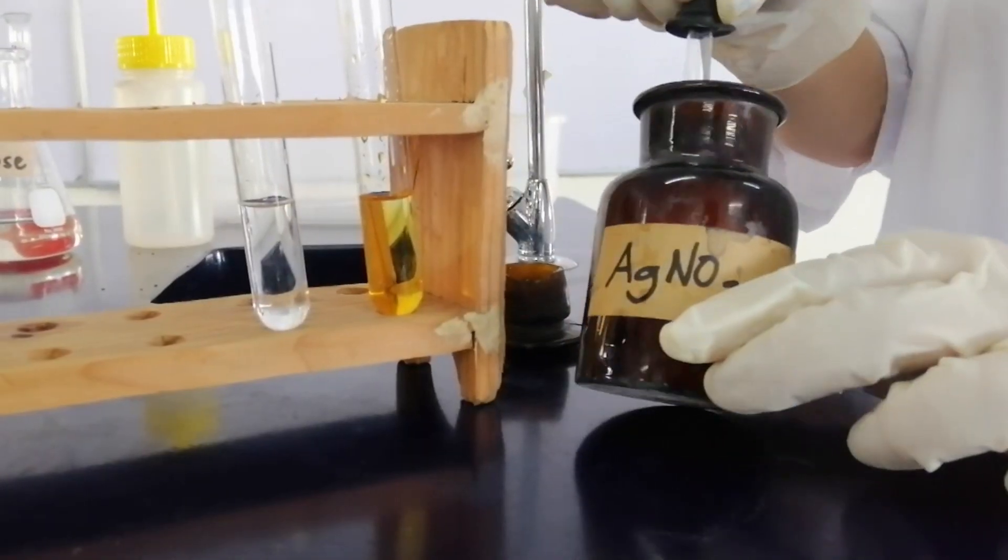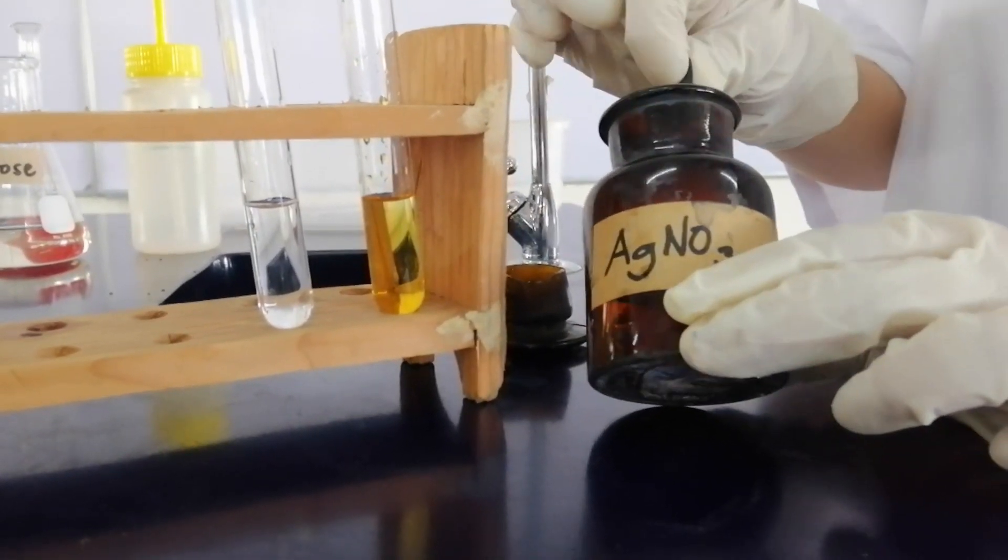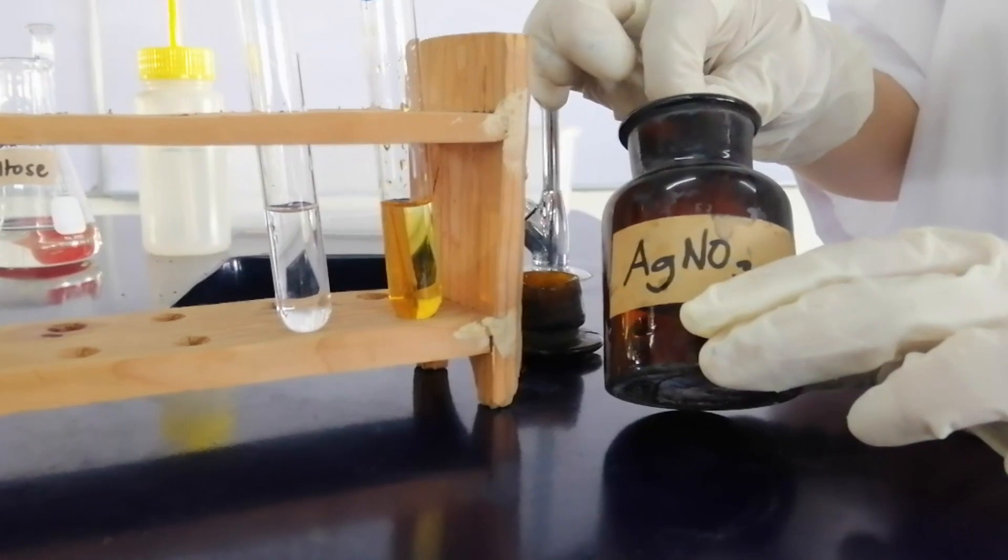We add a drop of silver nitrate. The formation of a white precipitate indicates the presence of sodium chloride.